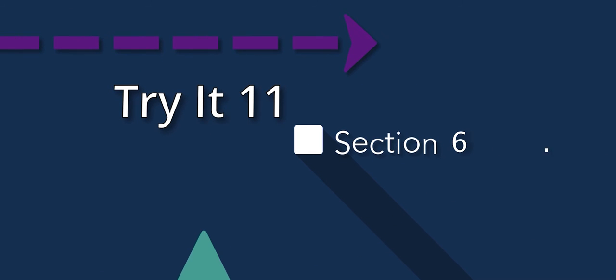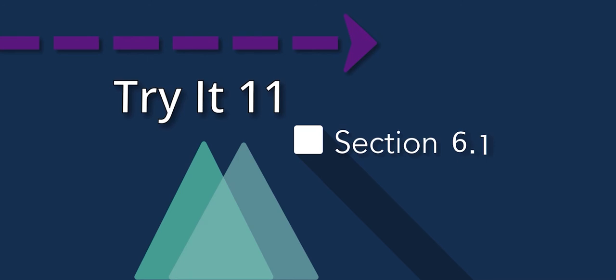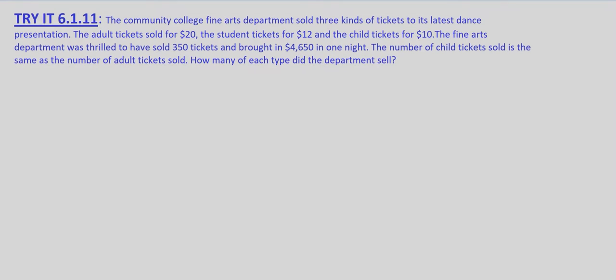Now we're looking at applications of solving systems of linear equations. In this exercise, we're told that the community college fine arts department sold three kinds of tickets to its latest dance. The adult tickets sold for twenty dollars, the student tickets for twelve dollars, and the child tickets for ten dollars. The department sold three hundred fifty tickets and brought in four thousand six hundred fifty dollars in one night. The number of child tickets sold is the same as the number of adult tickets sold. So how many of each type did the department sell?